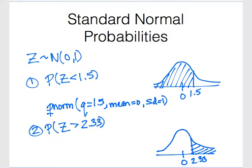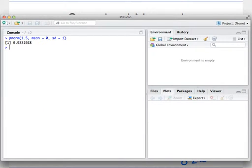So we can go to R again, and knowing that the total area under the curve is 1, we know to calculate an upper tail area, we do 1 minus PNORM, and what we want. So 2.33, mean 0, standard deviation of 1, and that gives us our upper tail area of approximately 0.01.